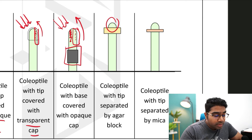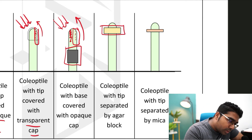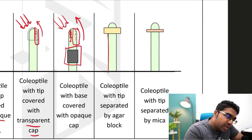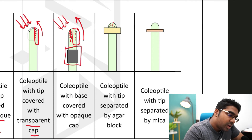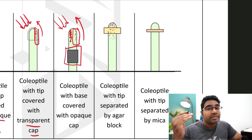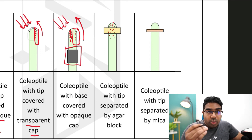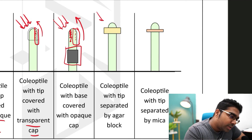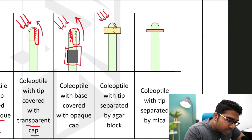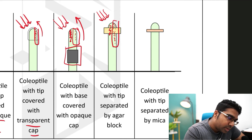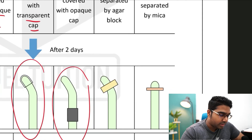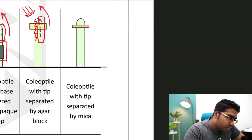What happens when you cut the coleoptile tip, place an agar block on the coleoptile, and then replace the tip on top? Auxin is produced at the tip and diffuses through the agar — remember that auxin is a phytohormone, a plant hormone, and as a chemical it is able to diffuse through the agar. When exposed to light, auxin moves away from the light, diffuses downward through the agar, causing higher cell elongation on the shaded side, and the coleoptile bends towards the light.